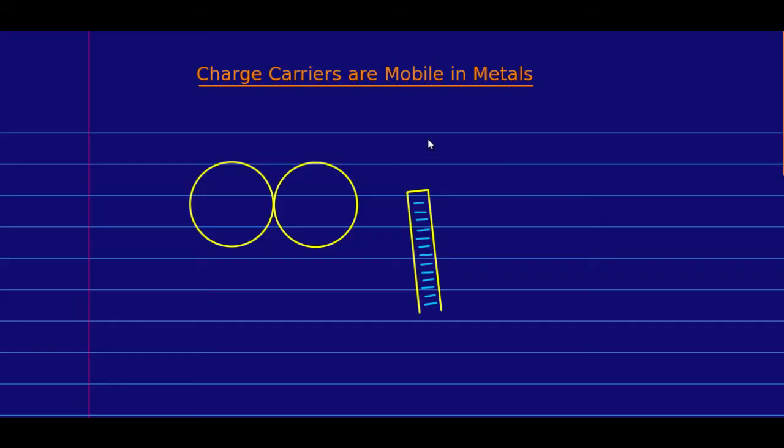Again, what does this tell us? Here's the negatively charged plastic rod, and here are the two metal spheres. As we'll see, the mobile charge carriers in metals are the negative ones, and so I'm only going to draw negative charges in this diagram.